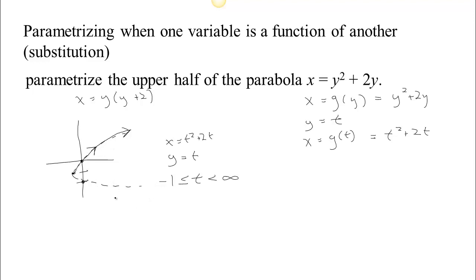Now here's a parameterization of the upper half. Keep in mind that a parameterization is not unique — for any path, there are multiple ways of walking it. Think of t as the time you're on the path: you might be on it early in the morning, late at night, or in the afternoon. You might walk quickly, slowly, or vary your speed. So there are many parameterizations for the same path.